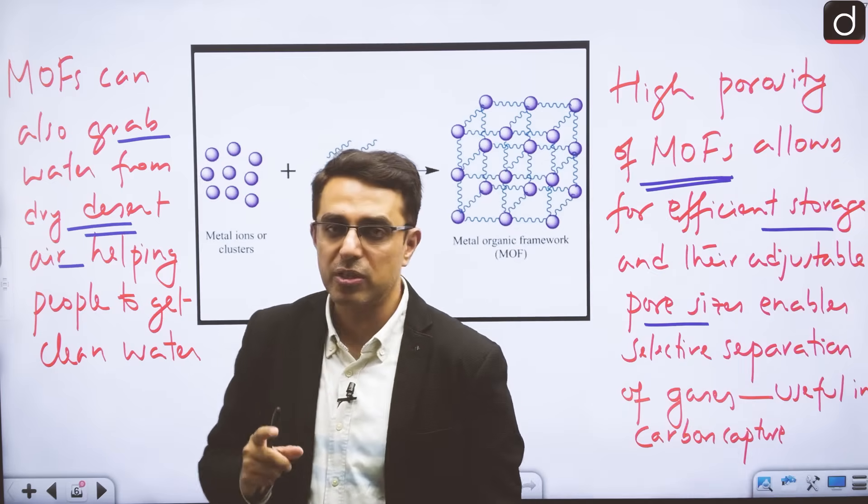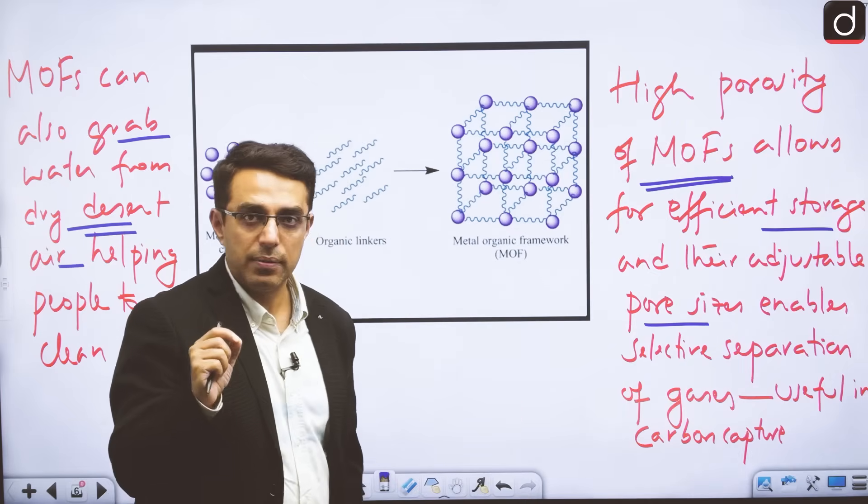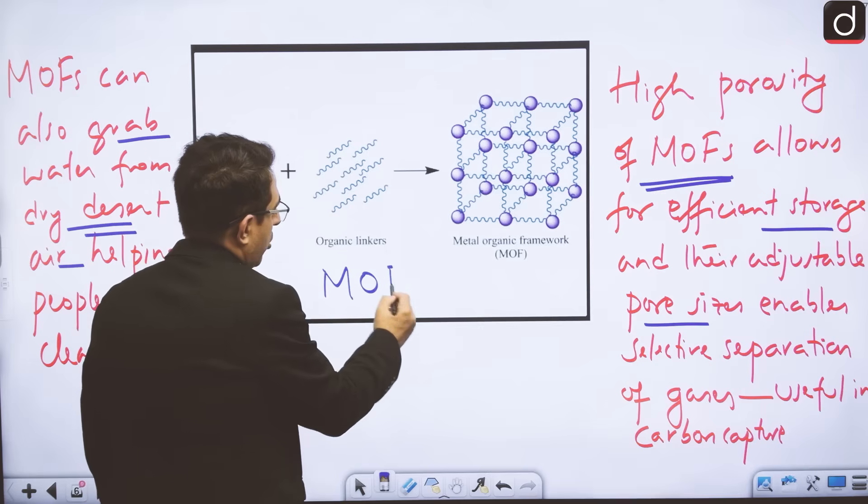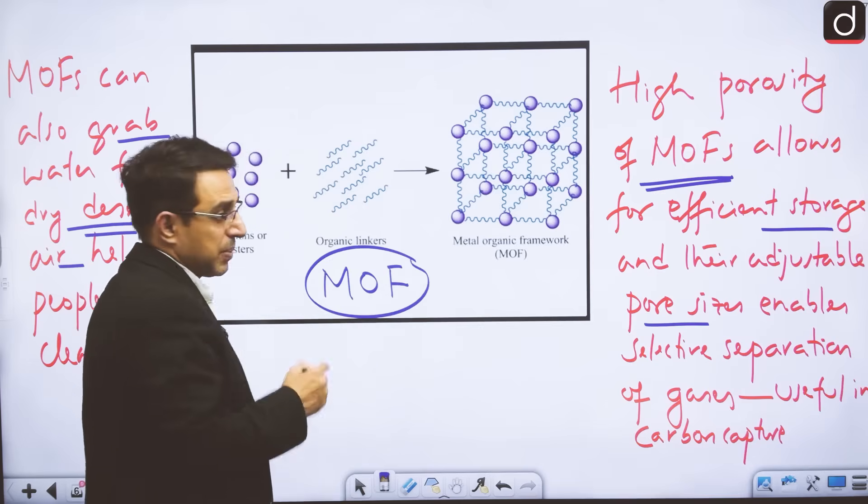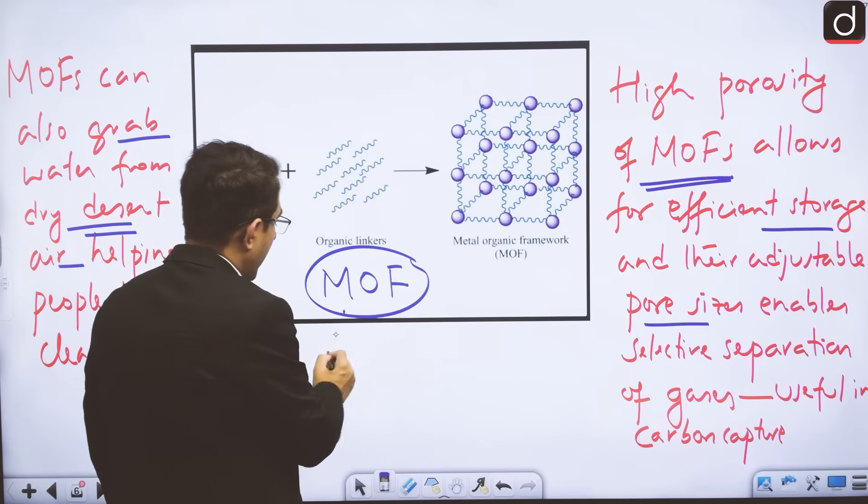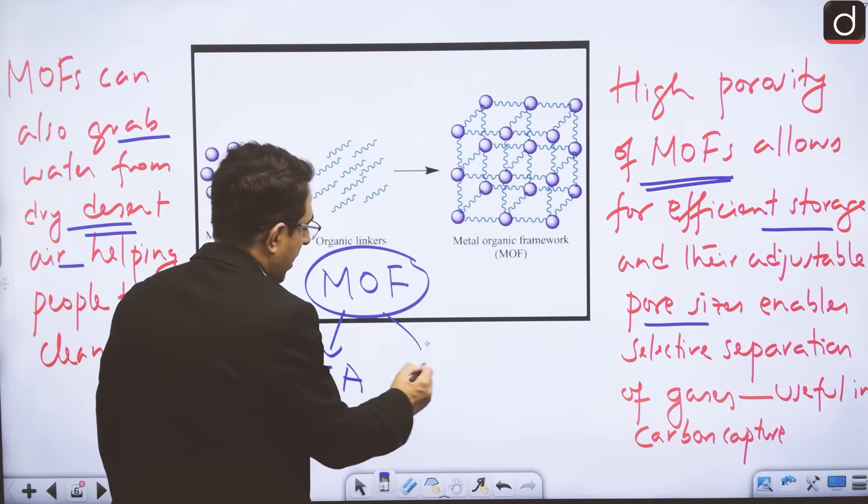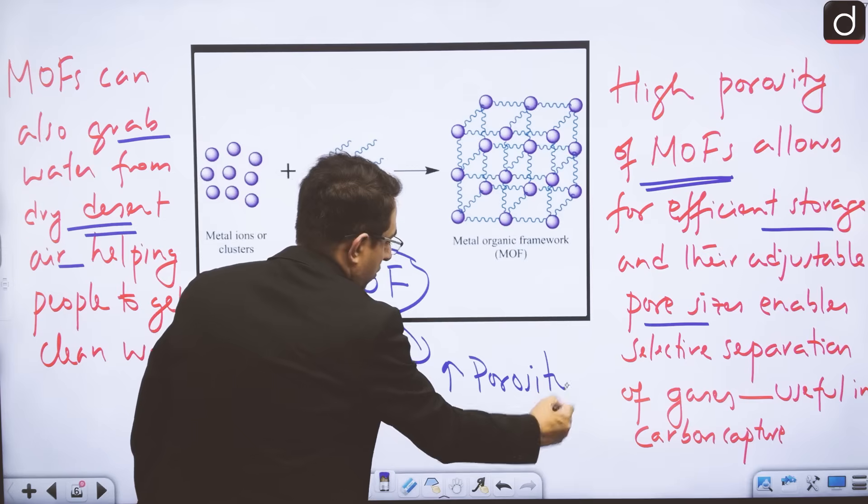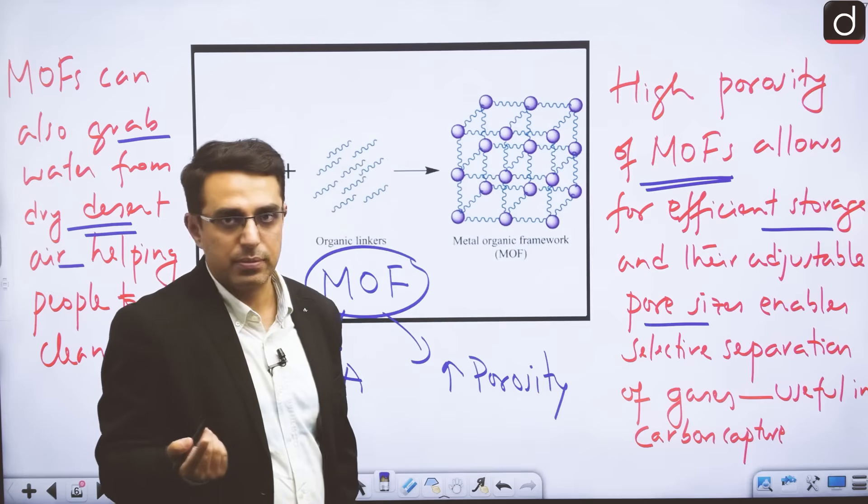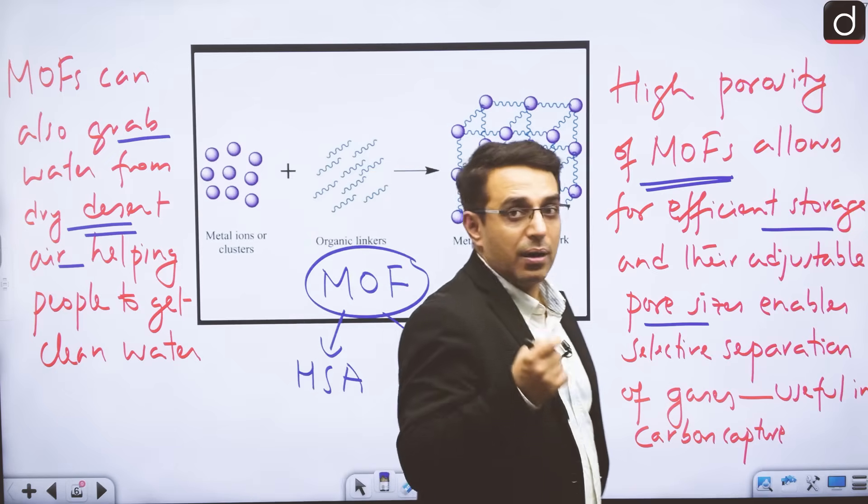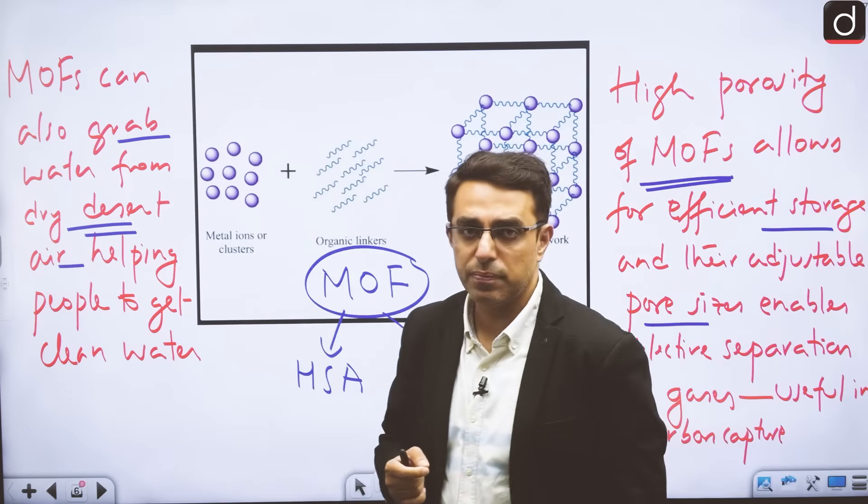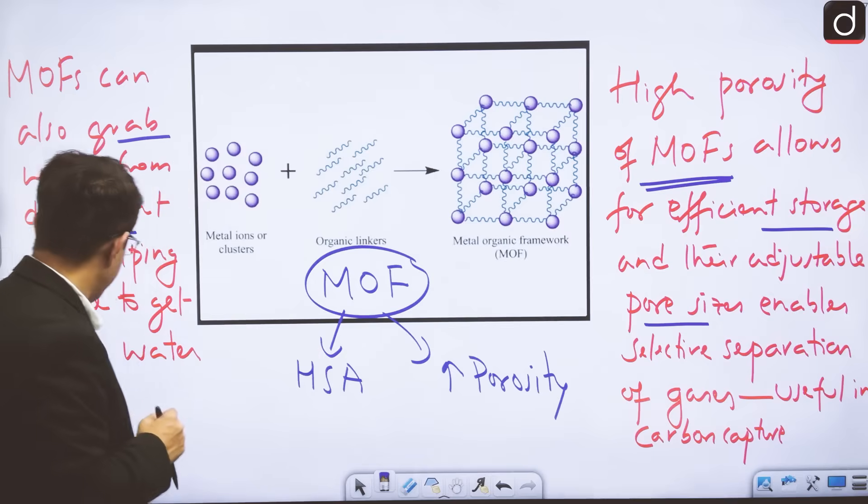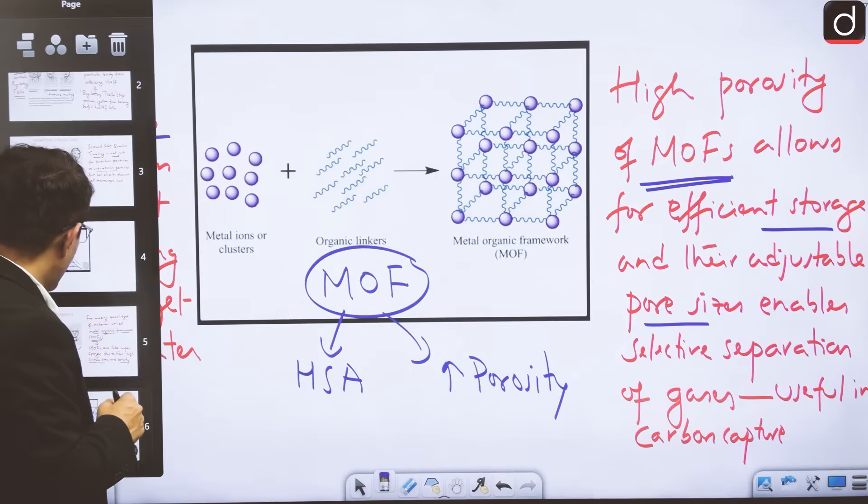Metal-organic frameworks - what we need to remember is that chemistry Nobel has been given for the discovery of metal-organic frameworks. These are special materials which have high surface area and very high porosity, which makes them useful for certain applications - applications for fighting climate change and also for various other applications like clean water.